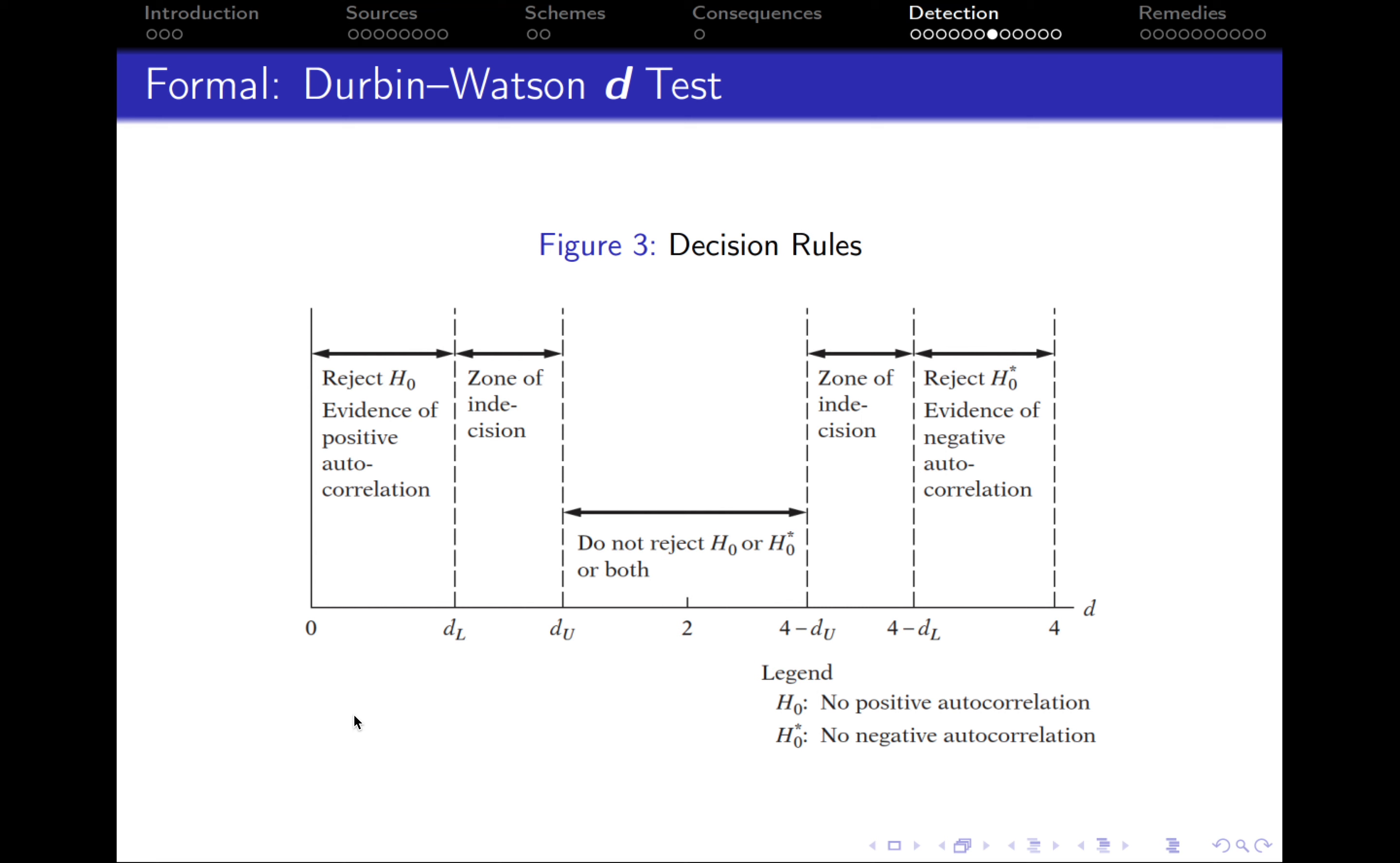If our estimated D statistic lies between the upper and the lower boundary, then this is the zone of indecision. So unfortunately, in this zone, we cannot make any conclusion about the state of autocorrelation, whether it is present, whether it is not present, whether it is positive, negative. So here we cannot make any decision.